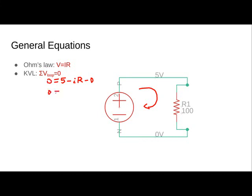So 0 equals 5 minus I times 100. Therefore, the current flowing across R1 must be 5 divided by 100, or 0.05 amps, or 50 milliamps.